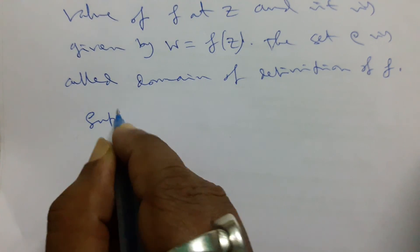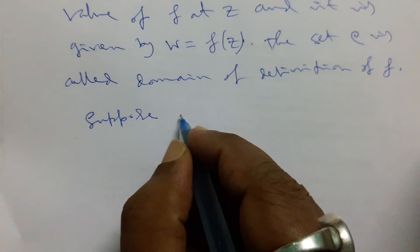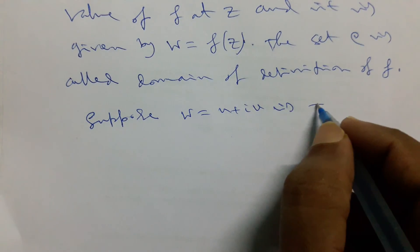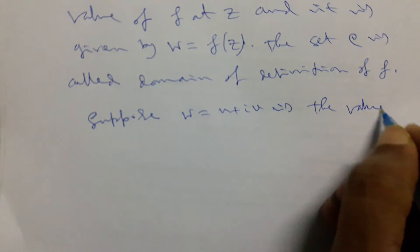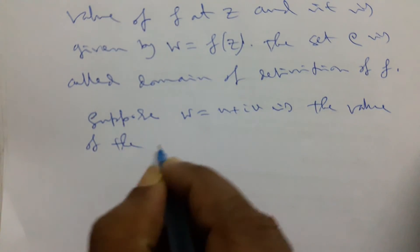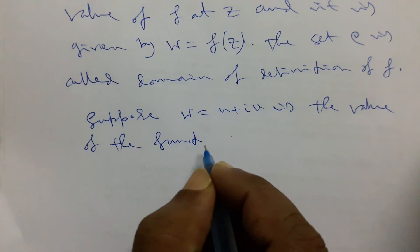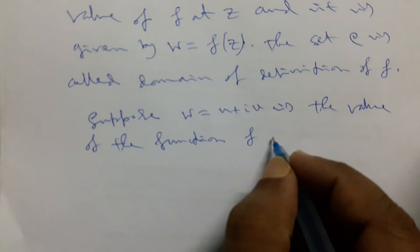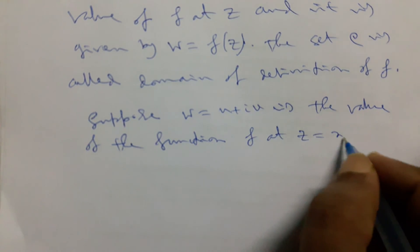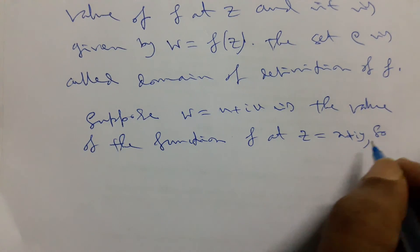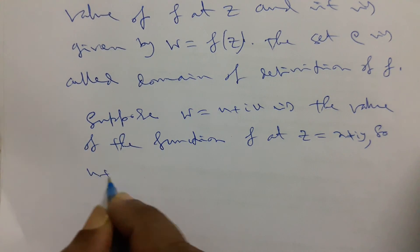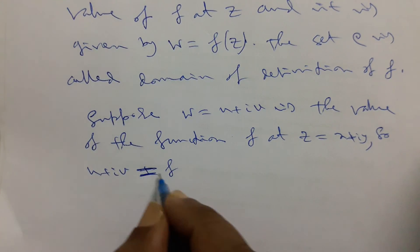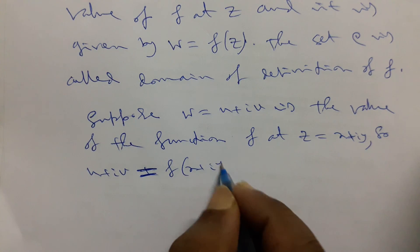Suppose w equals u plus iv is the value of the function f at z equals x plus iy. So u plus iv equals f of x plus iy.